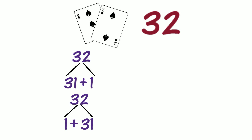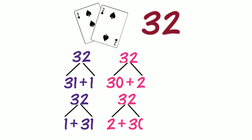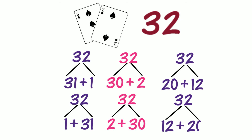How could we partition 32 into parts that use standard place value? Could we partition 32 into 30 and 2? If the parts swap places, could we describe this partition as 2 and 30? How could we partition 32 into 2 parts using non-standard place value? Could we partition 32 into 20 and 12? If the parts swap places, what other partition do we know? Do we know 12 and 20? Did we partition 32 into 2 parts using non-standard place value?